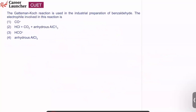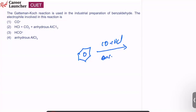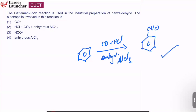Question number 48: the Gattermann-Koch reaction is used for industrial preparation of benzaldehyde. Benzene reacts with CO and HCl in presence of anhydrous AlCl3. The electrophile involved in this reaction is CHO⁺ (formyl cation). Answer is option 3.